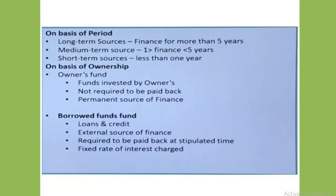On the basis of ownership, the sources can be classified into two categories: first, owner's funds, and second, borrowed funds. Owner's funds are the funds provided by the owner of the business enterprise. For example, funds or capital provided by a sole trader, partners, or shareholders of a company. Owner's funds are not required to be paid back, which is why it is a permanent source of finance. Borrowed funds are the funds raised through loans or borrowings. For example, loans from commercial banks, loans from financial institutions, issue of debentures, etc. These sources provide funds for a specified period which have to be repaid after the expiry of that period. There is a legal obligation to pay interest at a fixed rate at regular intervals, and borrowed funds are generally provided on the security of some fixed assets.